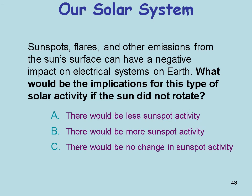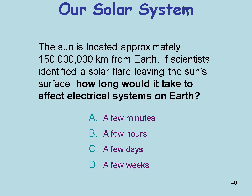Here's a question about sunspots. Flares and other emissions from the sun's surface have a negative impact on electrical systems on Earth. What would be the implications if the sun did not rotate? There would be less sunspot activity, because the differential rotation between the equator and the poles on the sun is what causes those sunspots and flares.